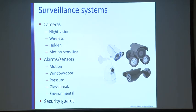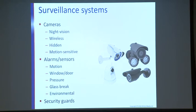For alarms and sensors, we can have motion sensors, window and door alarms — where an alarm sounds within ten seconds of a door being opened — pressure plates, glass-break detectors, and environmental alarms for fire, temperature, or humidity. Probably the best surveillance system is the security guard. In a guard shack setup, you'll typically have two guards — one stationary in the shack monitoring camera feeds, alarms, fire alarms, and 911 calls, and one roaming the facility.